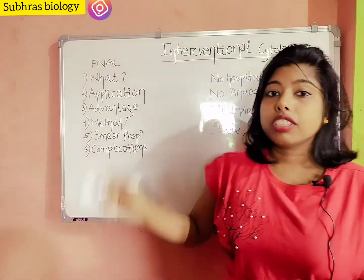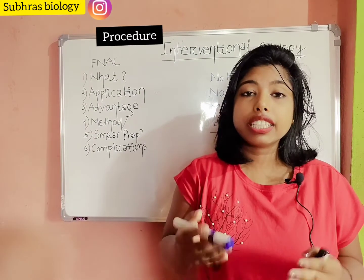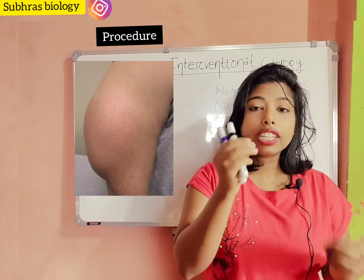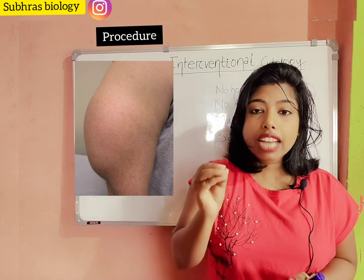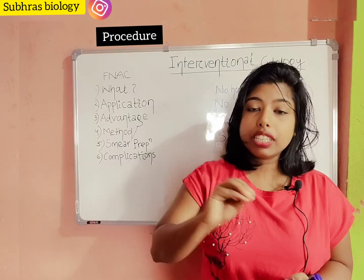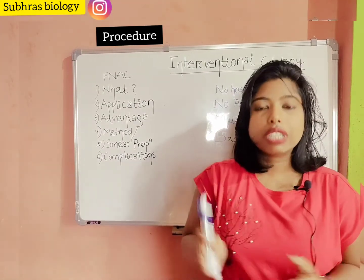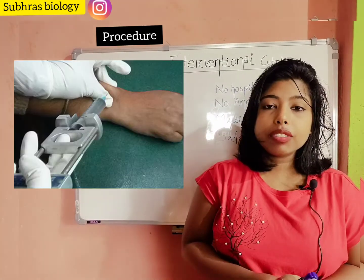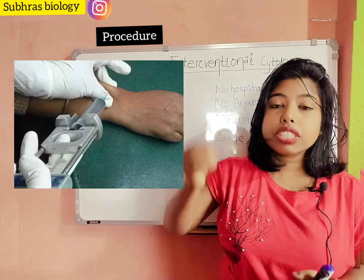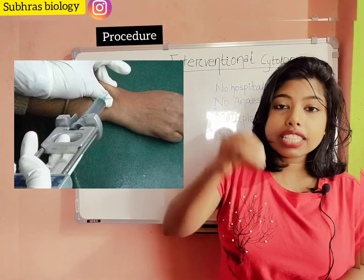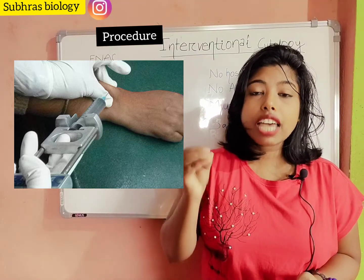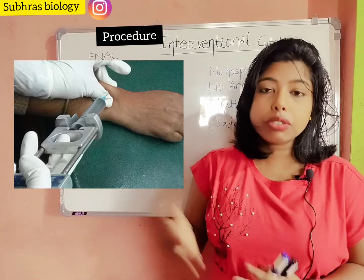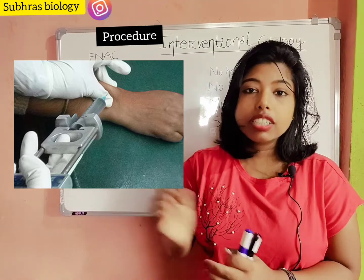Now let's look at the method and procedure of FNAC — how we collect samples. First, we fix the target tissue, then with an alcohol swab we clean that particular area. After that, we put the syringe or needle into the target site. You can also change the angle and direction of the needle. After that, we collect the samples — this is the aspiration procedure of FNAC.